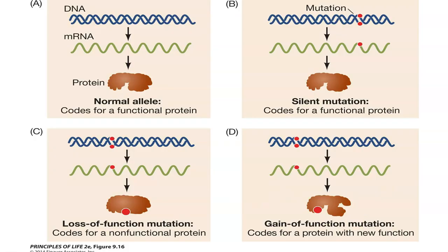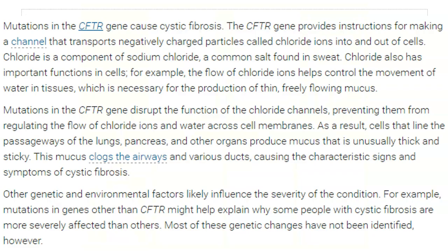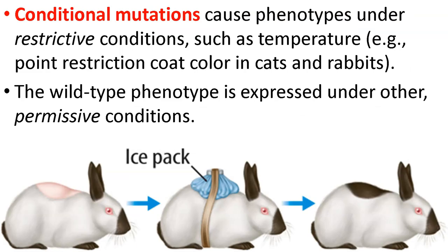Cystic fibrosis is a recessive allele — two carriers can have a child with CF. Mendelian genetics: mutations in the CFTR gene cause cystic fibrosis, and there are thousands of different mutations that can cause this. Environmental conditions can affect the severity. Gain of function mutations can lead to increased activity of certain proteins and tissues. An example is Down syndrome — you have Trisomy 21, so a higher gene dosage leads to different protein activity. Another example is hemoglobin Kempc, a mutant hemoglobin with such high oxygen affinity that it does not release oxygen. There are also conditional mutations that depend upon the environment, like point restriction coat color in rabbits and cats.